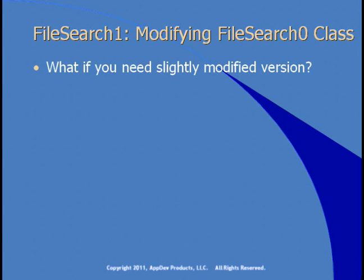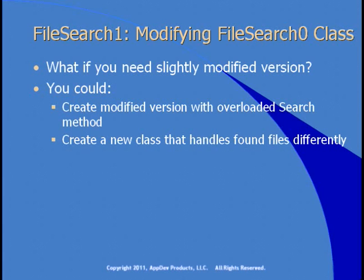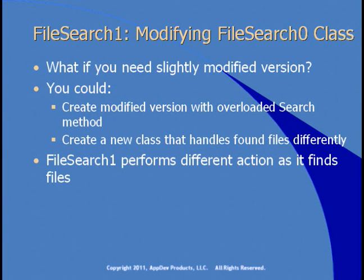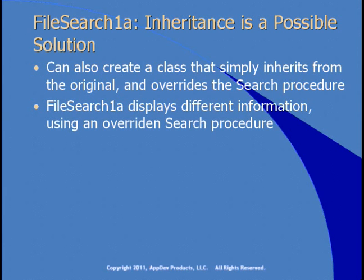What if you need a slightly modified version? Your boss comes in and says don't return a list of file info — write the output somewhere. You could create a modified version with an overloaded search method, or create a new class that handles the files that were found differently. FileSearch1 performs a different action — basically just copied and pasted the class. There's an alternative: you could use inheritance, creating a class that inherits from the original and overrides the search procedure.